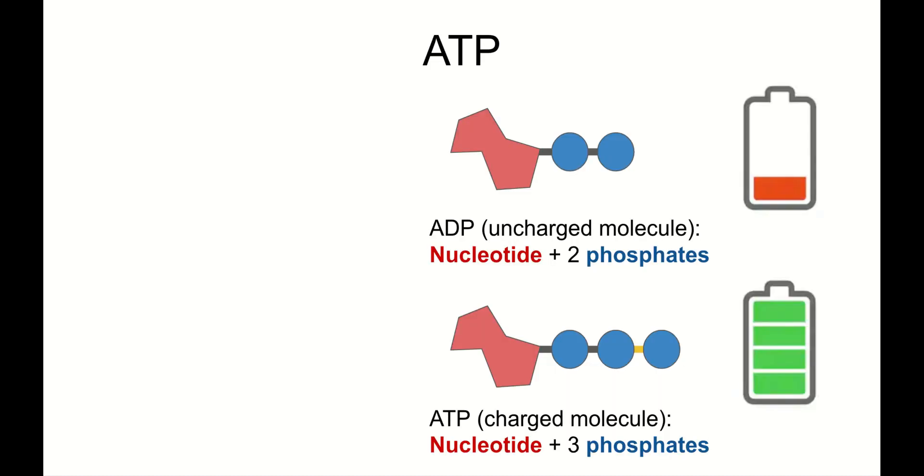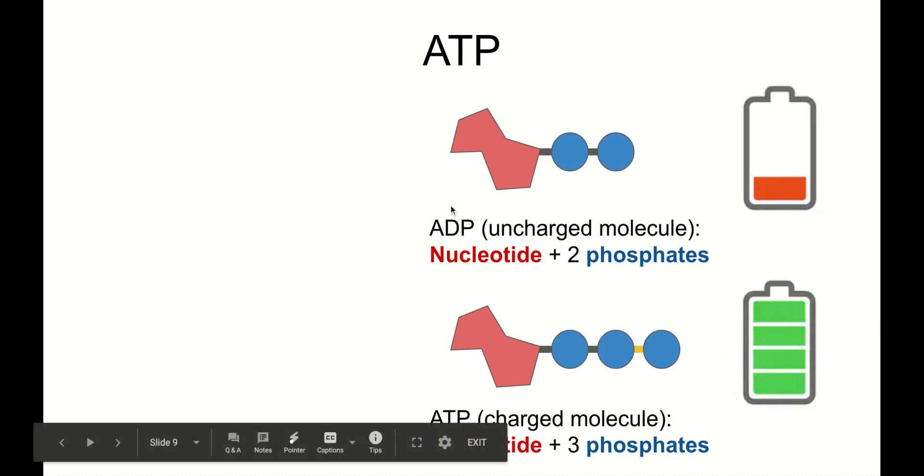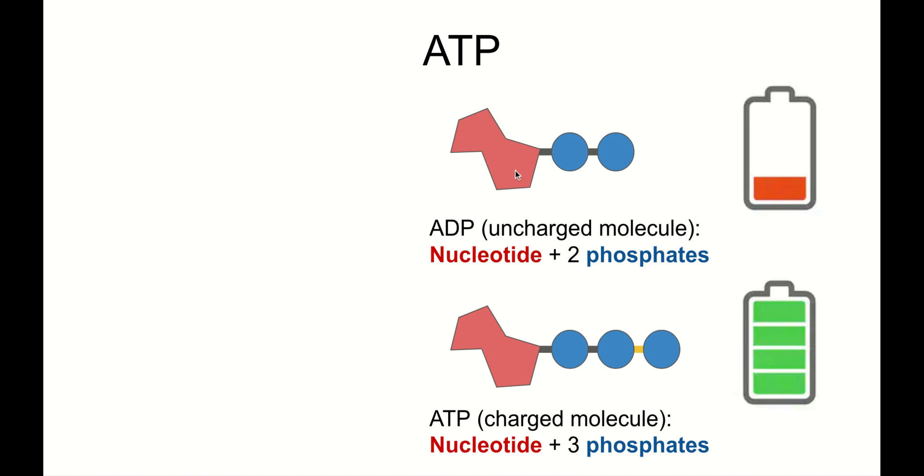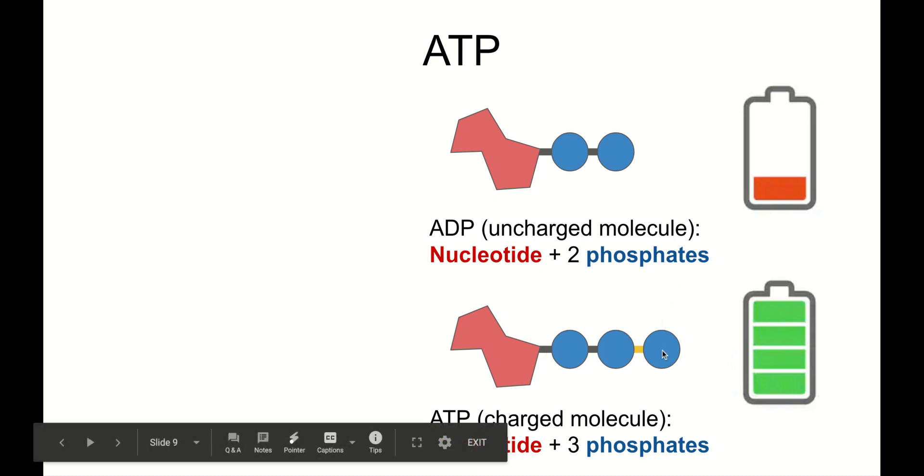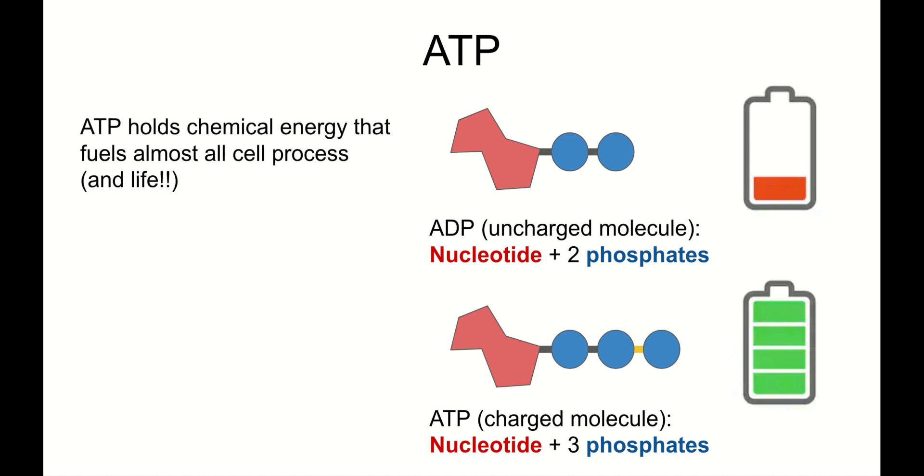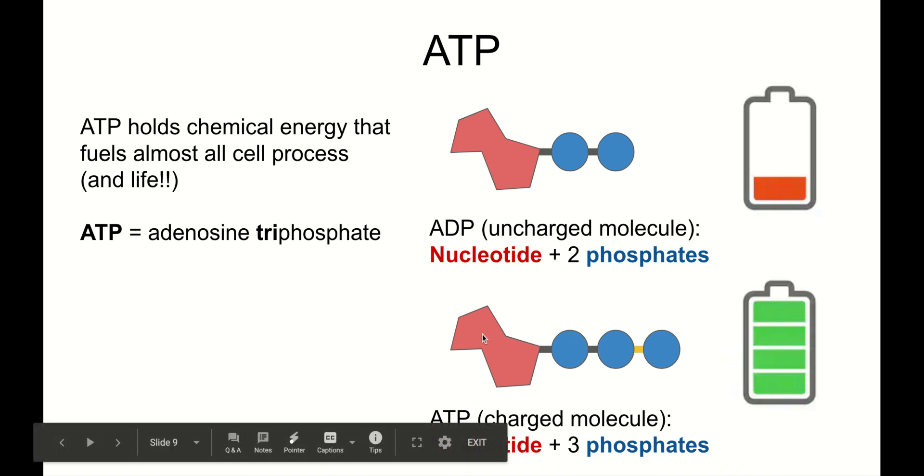Let's talk more about ATP. You can learn all you need to know from just these two pictures. We've got two different molecules on the screen. This one's labeled ADP, uncharged molecule. It's made of a nucleotide and two phosphates. Those are the blue circles. Then we've got ATP, and the only difference is that it's got a third phosphate on the end. Same nucleotide plus three phosphates. It says charged molecule. You can see this little yellow bond at the end. This is our energy-filled bond right here.